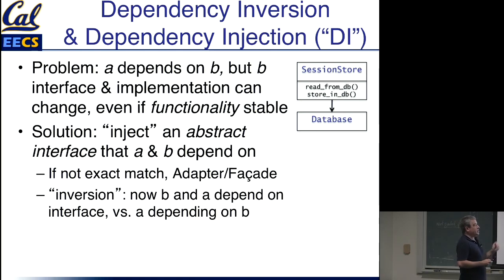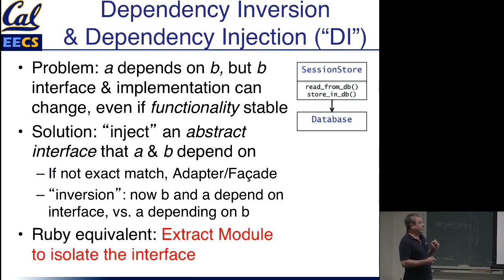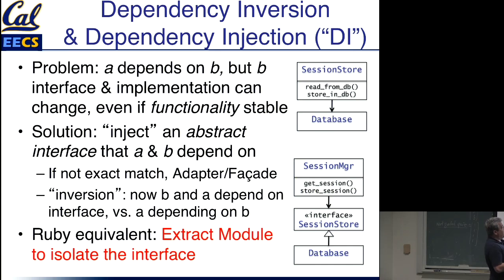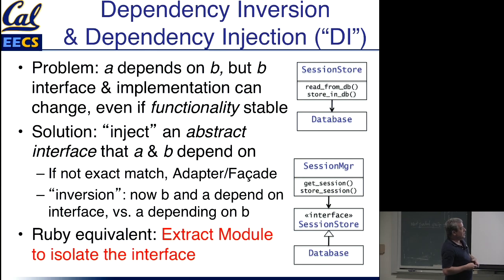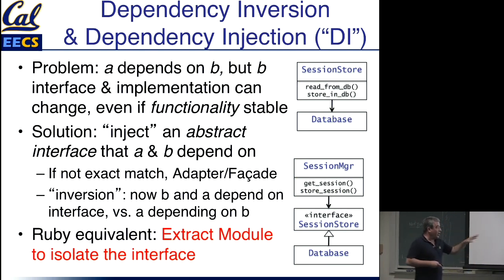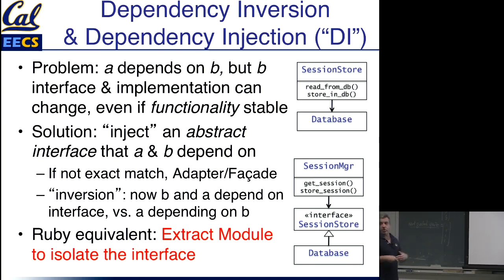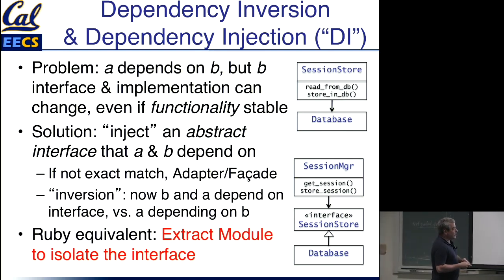The reason it's called dependency injection is that counter-intuitively, the way you fix it is by creating a new dependency that doesn't already exist. You say we're not going to have sessions stored directly called database — we're going to create an intermediary, which is really just an interface. All it does is provide a common, well-known set of calls to whoever the caller is above it, and it will translate those into whatever it looks like for the thing below it. You're inserting a layer that hides not only the implementation but even the interface of the thing under it.